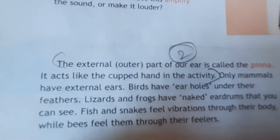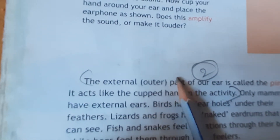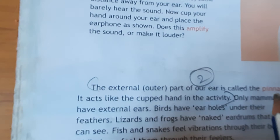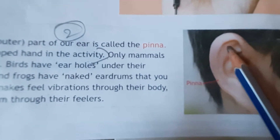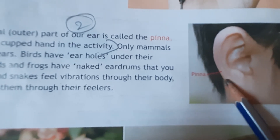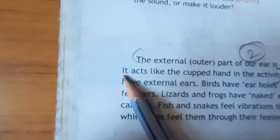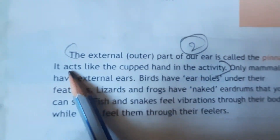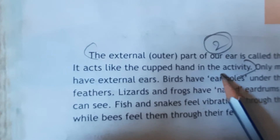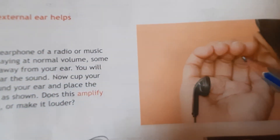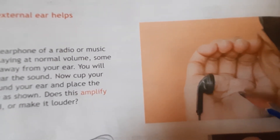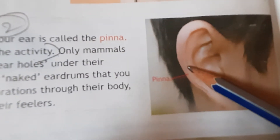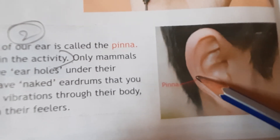The external or outer part of our ear is called the pinna. This outer portion is known as the pinna. It acts like the curved hand in the activity we just did. Our pinna is acting like that curved hand, collecting sound and directing it into the ear.